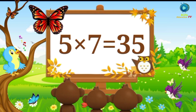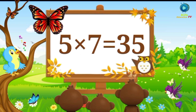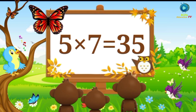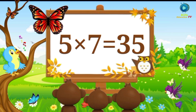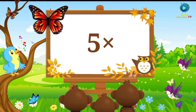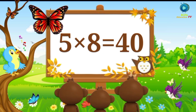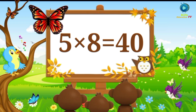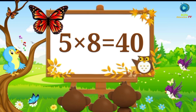5 sevens are 35. Say with me: 5 sevens are 35. 5 eights are 40. Say with me: 5 eights are 40.